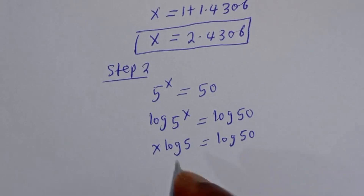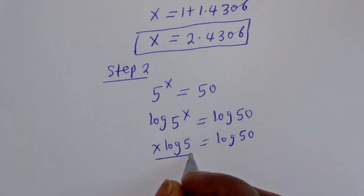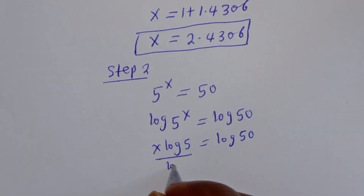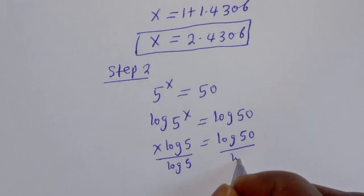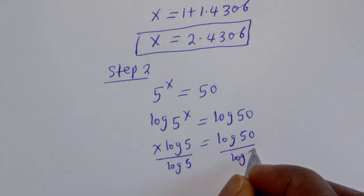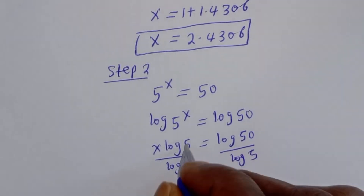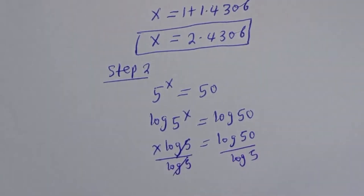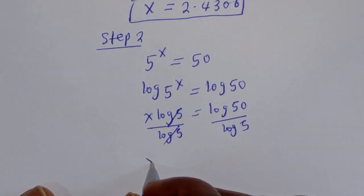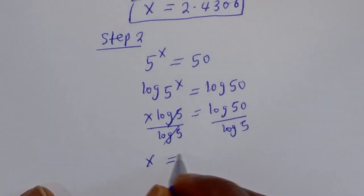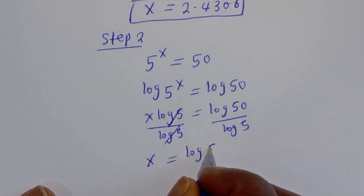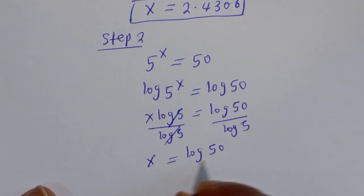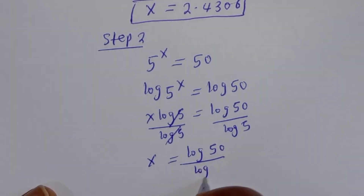Then s log 5 is equal to log 50. Let's divide both sides by log 5. This will cancel. S is equal to log 50 over log 5.